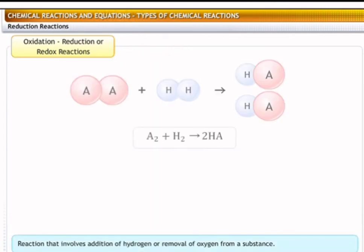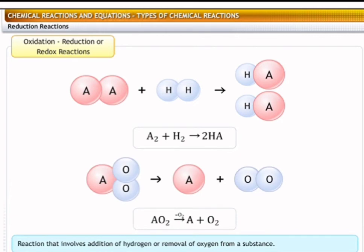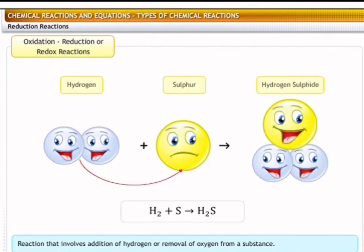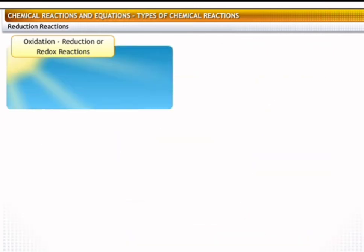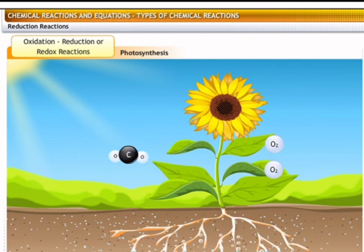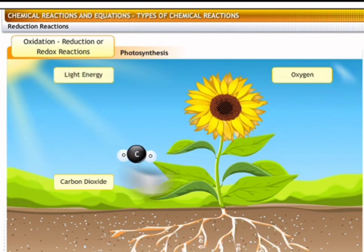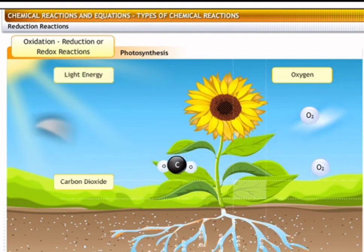A reduction reaction involves the addition of hydrogen or the removal of oxygen from a substance. It is exactly the opposite of an oxidation reaction. For example, the formation of hydrogen sulfide involves a reduction reaction. In this reaction, when hydrogen is added to sulfur, sulfur gets reduced to hydrogen sulfide. Another example of a reduction reaction is photosynthesis. In plants, carbon dioxide and water are reduced to carbohydrates in the presence of light and the pigment chlorophyll.